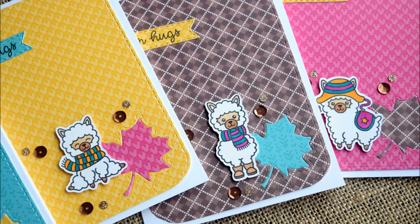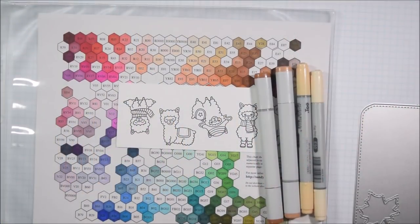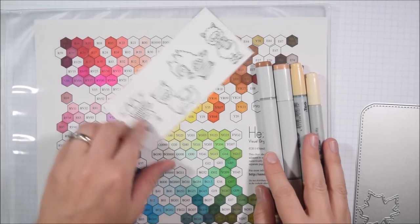Hello crafty friends, it's Jess from JessCrafts.com and today I have a set of four fall cards featuring some products from Sunny Studio, Lawn Fawn, and Cat Scrappiness.